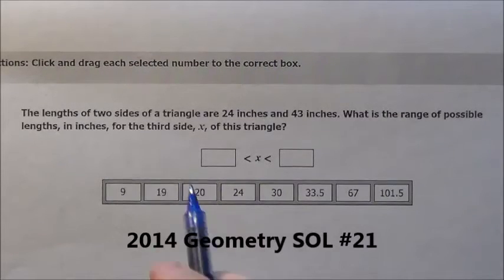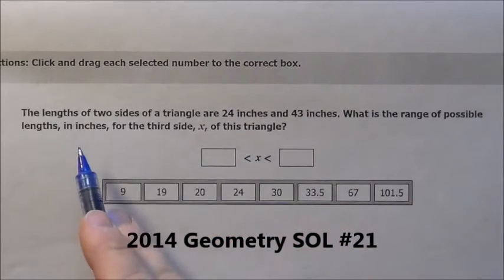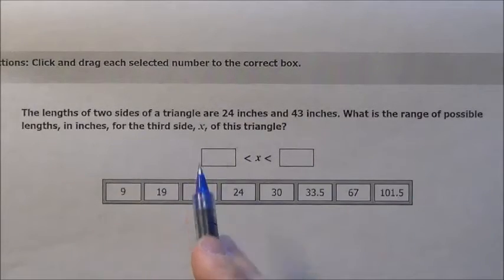Here's problem 21. It's a pretty common problem. It says the lengths of two sides of a triangle are 24 and 43. What's the range of possible lengths in inches for the third side X?